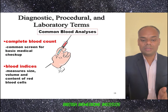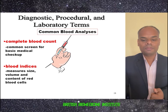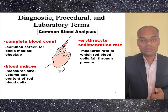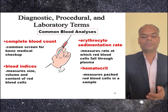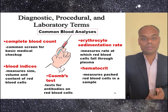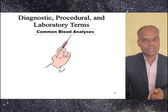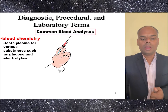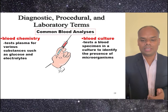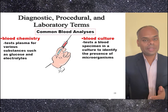Blood indices help in measuring the size, volume, and content of RBC cells. ESR, erythrocyte sedimentation rate, measures the rate at which RBC cells fall into the plasma. Hematocrit helps in measuring packed RBC cells in a sample. The Coombs test helps for testing antibodies on RBC cells. Biochemistry helps in testing the plasma for various substances such as glucose and electrolytes. Blood culture tests a blood specimen in culture to identify the presence of microorganisms.